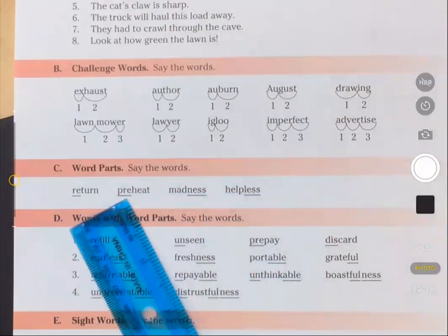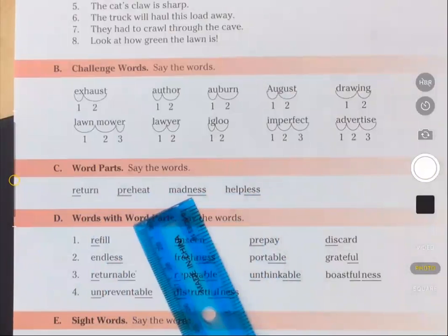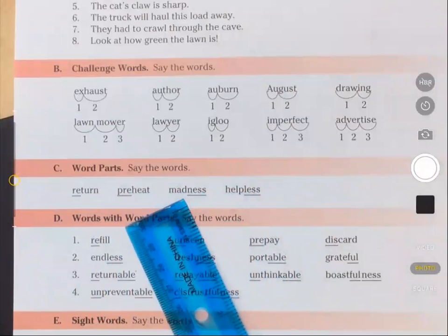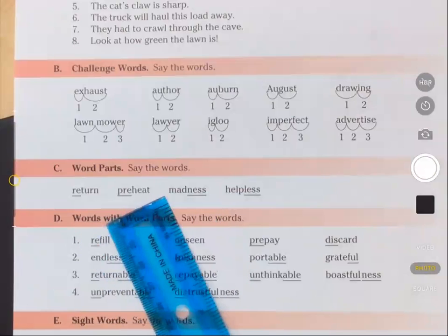The underlined letters are n-e-s-s. The sound is ness. The word is madness.